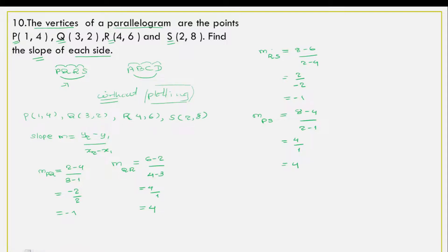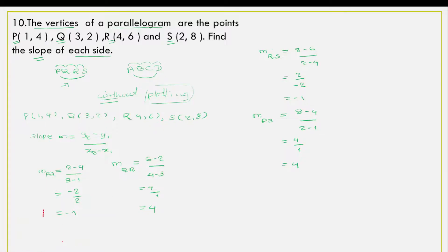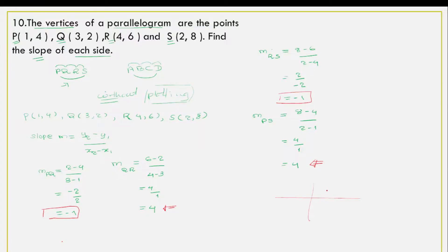It is important to note that MPQ and MRS are both equal to minus 1, confirming those sides are parallel. The slope MQR equals 4 and MPS should also be compared. These results help us determine the properties of quadrilateral PQRS.